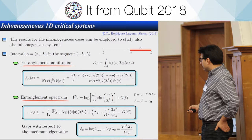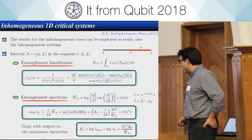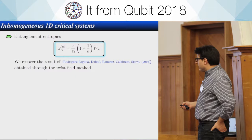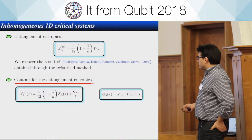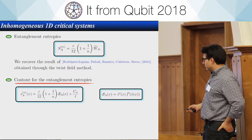The entanglement spectrum follows the same logic: the expression for the eigenvalues involves W̃, the width of the annulus in terms of this map. The Rényi entropies can be written in a corresponding form, and we recover the result previously obtained by these authors using the twist field method. In addition, we can also construct the contour function using this map.